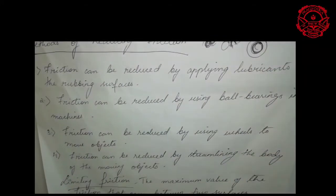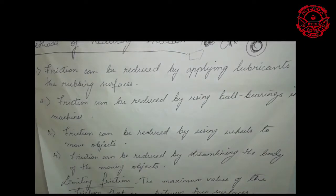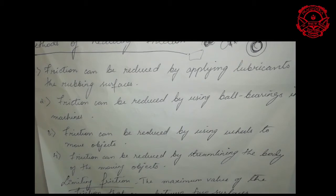Another method is that friction can be reduced by using wheels to move an object. It is quite difficult to move a heavy suitcase by dragging it on the ground because the friction between the suitcase and the ground is very large. To make it easier, you can put small wheels on the suitcase so you can pull it on the ground easily. With wheels, the friction becomes less between the wheels of the suitcase and the ground. If you do not put wheels, the friction between the suitcase and the ground is more. All moving vehicles like bicycles and cars are also fitted with wheels in order to reduce friction with the road.